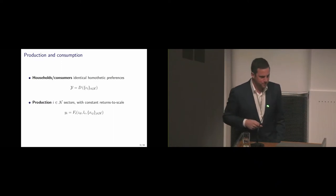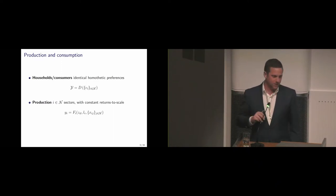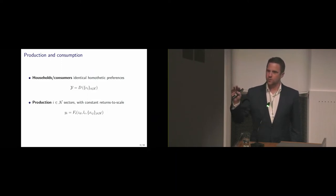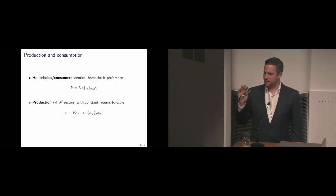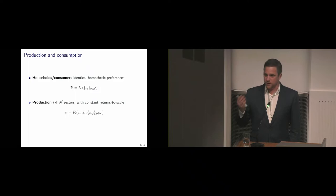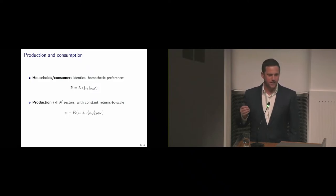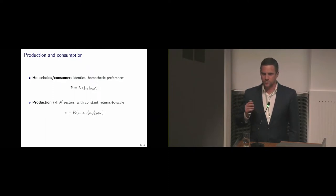A helicopter view of the model: households are going to be consumers but also workers in production. On the consumption side, they have identical homotetic preferences, so real GDP, Y, is given by a homotetic aggregator D which aggregates over all consumption goods in the economy. Consumption goods are indexed by I, which is also the sector — one good, one sector in this case.